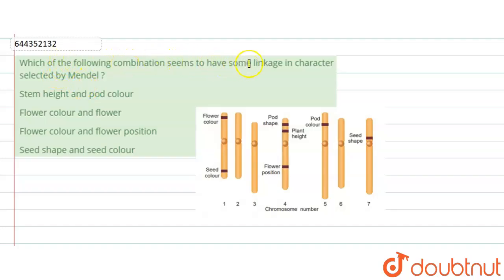Which of the following combination seems to have some linkage in characters selected by Mendel? The options are given as follows. Now, linkage means that genes are associated or have close association with each other when present on